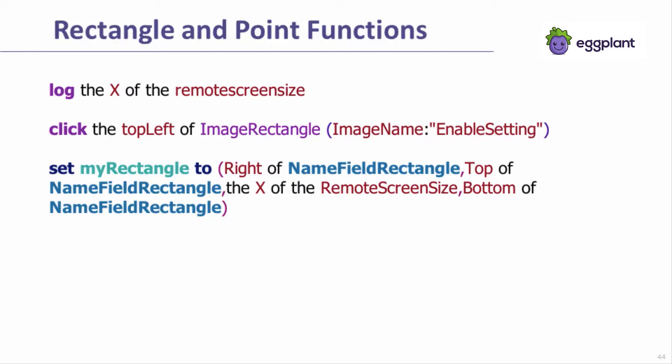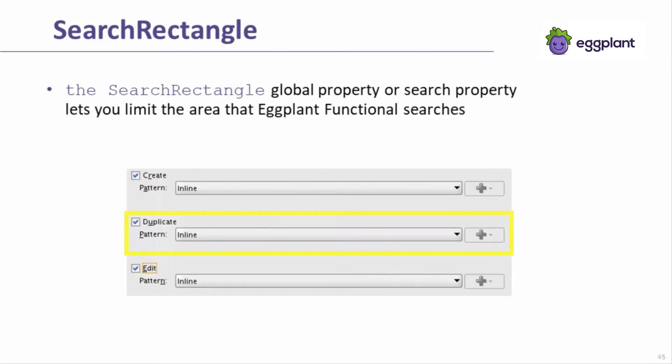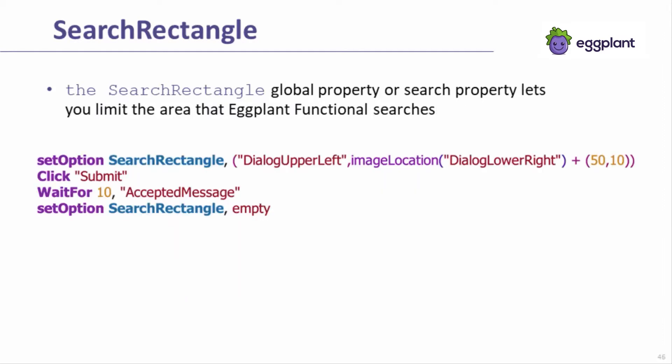Image location, image rectangle, and the rectangle and point functions are particularly useful when setting up search rectangles, which is the next topic. Search rectangles specify a subset of the screen that should be searched by Eggplant. A search rectangle can be specified via the global property, such as in this first example. This search rectangle is based on the position of the hotspot of the dialog upper left image and on a pixel adjustment of 50 pixels to the right and 10 pixels down from the hotspot of the dialog lower right image. Note the use of the image location function when performing the pixel adjustment. Any searches executed after setting the search rectangle global property will honor that search rectangle. The search rectangle can be returned to full screen, which is the default, by using the empty keyword or a pair of empty parentheses.